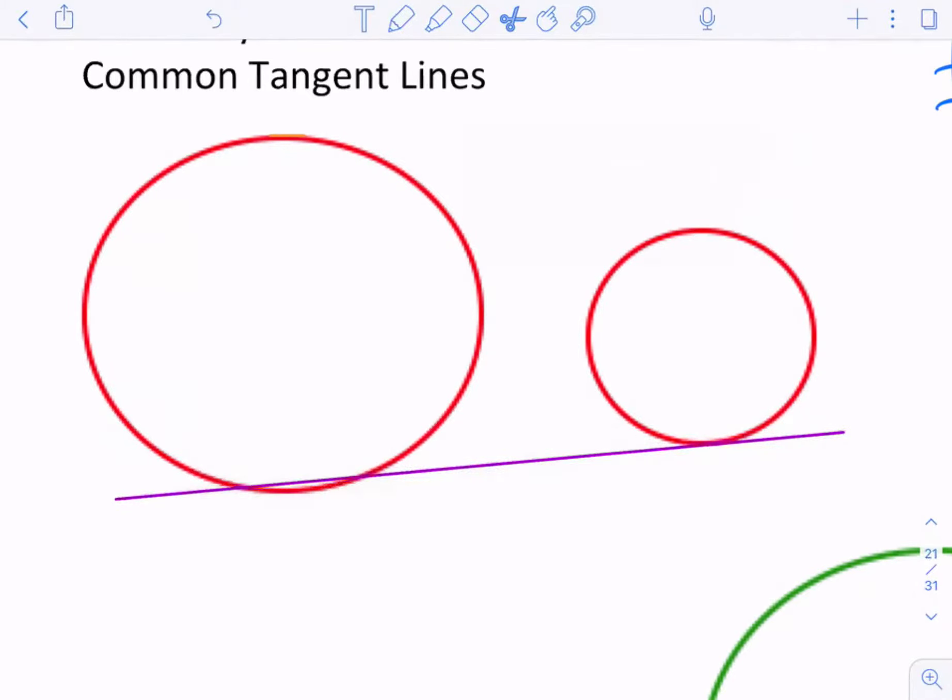Here we go. So notice, oh, well, of course not. This always happens to me, Ms. Murphy. That's okay. Here we go. There we are. So there is our tangent line. It's a common tangent line because it touches both circles only at one point. So that's a common tangent line.